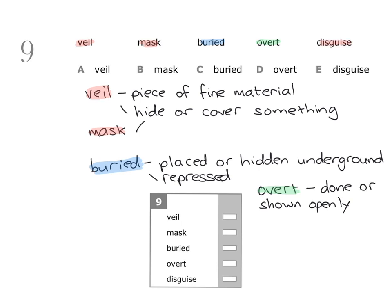Finally, we have the word disguise, and this can go with veil and mask. If you veil, mask, or disguise something, that means you are hiding or covering it — you don't want the reality of something to be revealed or seen. From this we can see that the three related words are veil, mask, and disguise, as these can all be synonyms. For example, you can veil, mask, or disguise your intentions, meaning you keep your true intentions hidden.